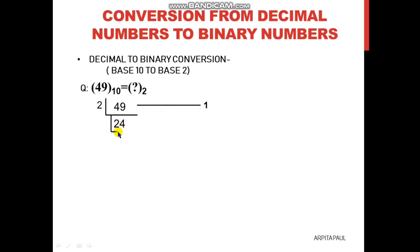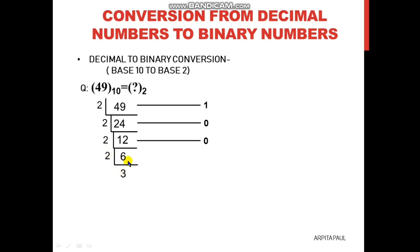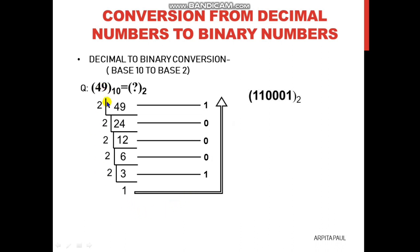Now again we divide 24 by 2. So 2 times 12 is 24, remainder 0 — we write 0. Then we divide 12 by 2: 2 times 6 is 12, remainder 0, we write 0. Now we divide 6 by 2: 2 times 3 is 6, remainder 0. Now we divide 3 by 2: 2 times 1 is 2, remainder 1. So you can see all the remainders are in the form of 0s and 1s. Now we will write the answer from bottom to up. Always write the answer from bottom to up. So the answer for 49 is 1 1 0 0 0 1.